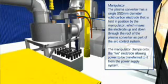The manipulator moves the electrode up and down through the roof of the plasma converter as part of the arc control system. It clamps onto the live electrode, allowing power to be transferred to it from the power supply system.